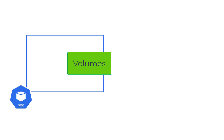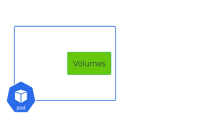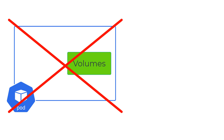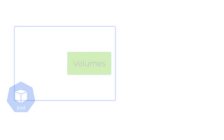In our previous video, we talked about volumes and how they are tied to a pod lifecycle. In other words, when a pod is deleted, the volume is also deleted. However, in certain use cases where there's a requirement to persist the data even after the pod is deleted, we would want to look at options such as persistent volumes.